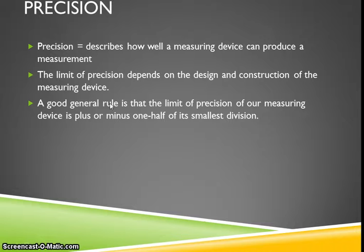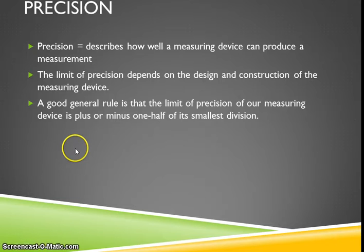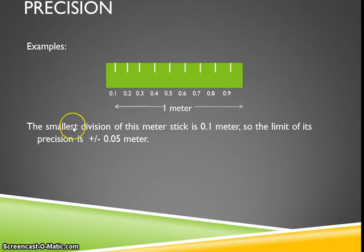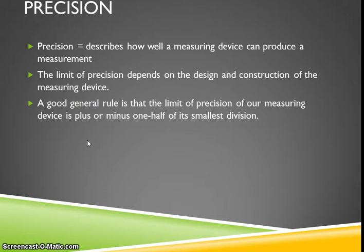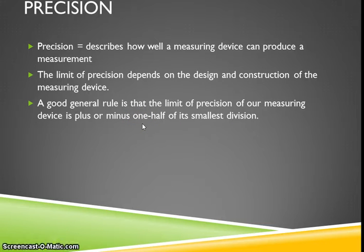A good general rule we use to discuss the limit of precision on any given measuring device is: find the smallest marking on that device, and the precision for that device would be one half of that smallest measurement. This rule is going to be important throughout the year — we find the smallest marking on a specific device and report the precision as one half of it.